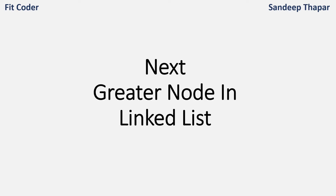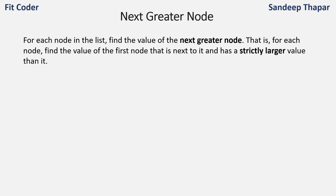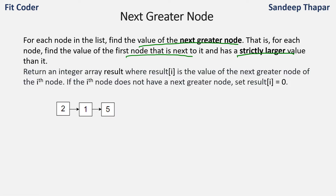Hi everyone. In this video we will discuss how to find the next greater node in a linked list. For each node in the linked list, we need to find the value of the next greater node — which means for each node, we have to find the value of the first node that is to the right of it and has a larger value than it. We need to return an integer array which contains the value of the next greater node for each node.